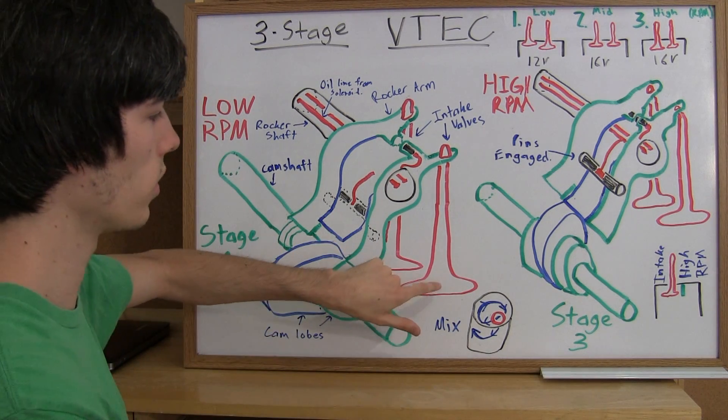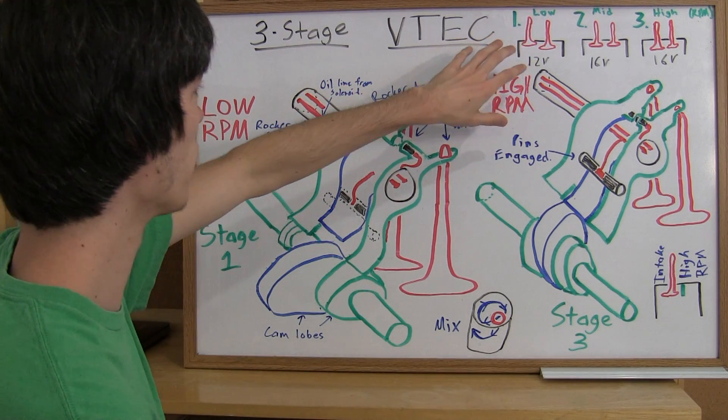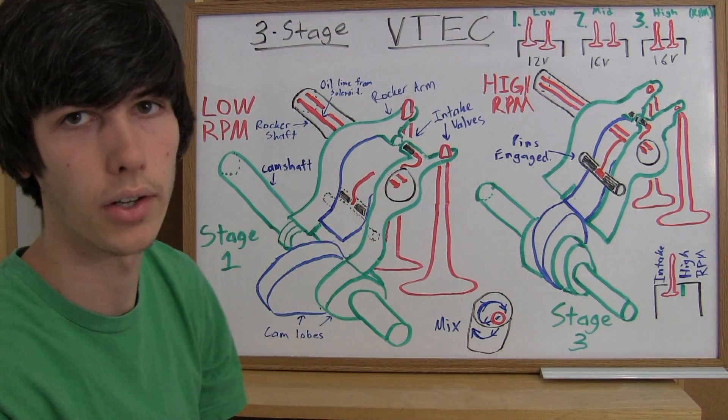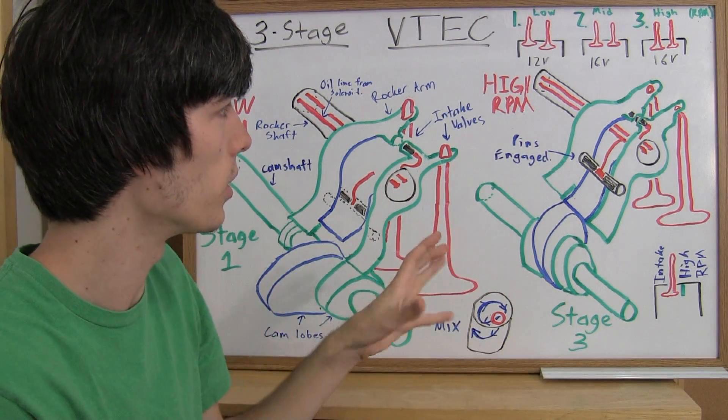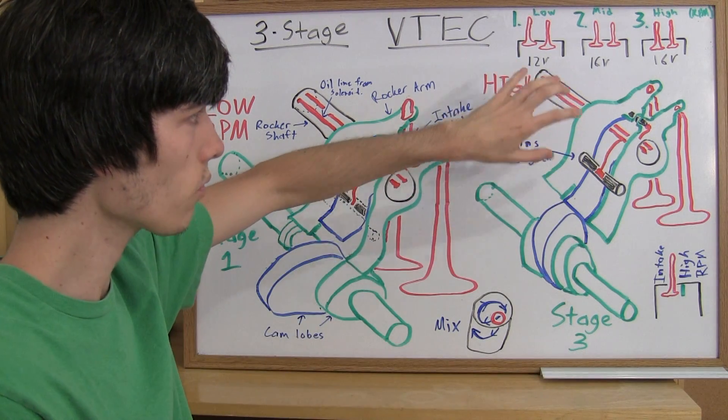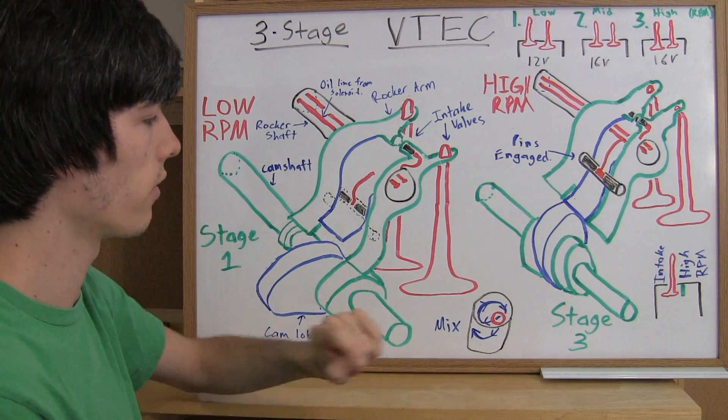That means you're just using a single intake valve with your stage one of this three-stage VTEC system, which means only 12 valves are going to be used. And this is assuming you've got a dual overhead cam system. So you'll still have two exhaust valves operating, but just a single intake valve operating.